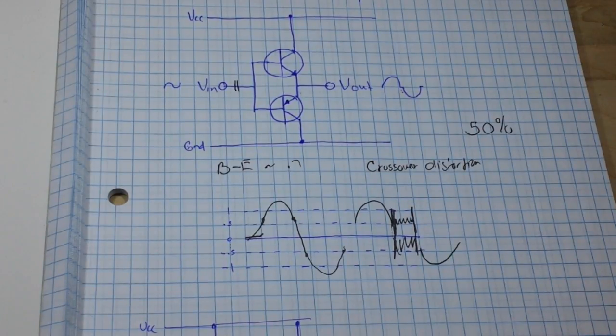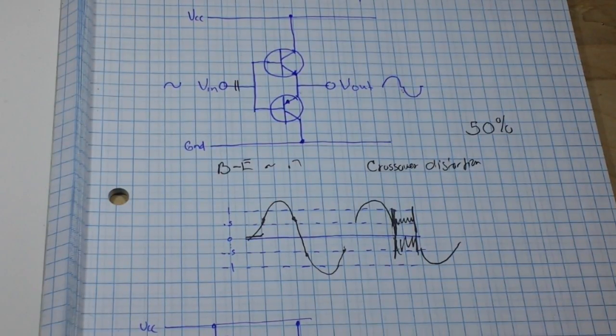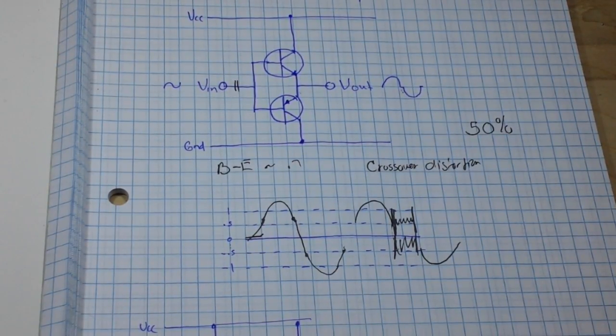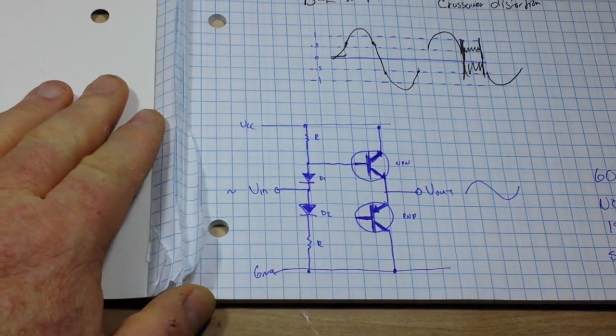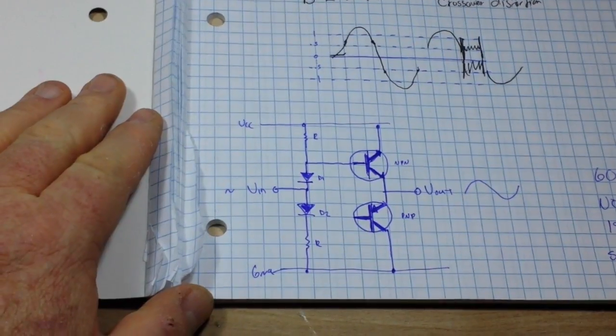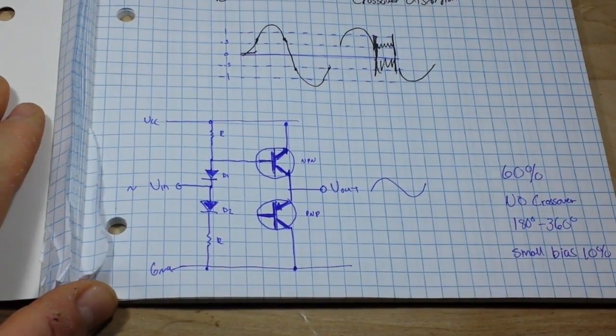Well, we can combine the two of them into what's called a Class AB amplifier, which is one of the most used power amplifiers today. So this is the Class AB amplifier.